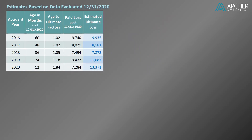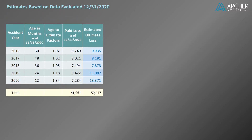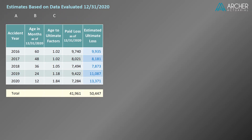This table includes all of the information we need to estimate loss reserves and IBNR as of 12/31/2020. Let's include a row for totals and some column labels. Note that our estimated ultimate loss, which we calculated in part two, equals the product of the age-to-ultimate factors and the paid loss as of 12/31/2020.